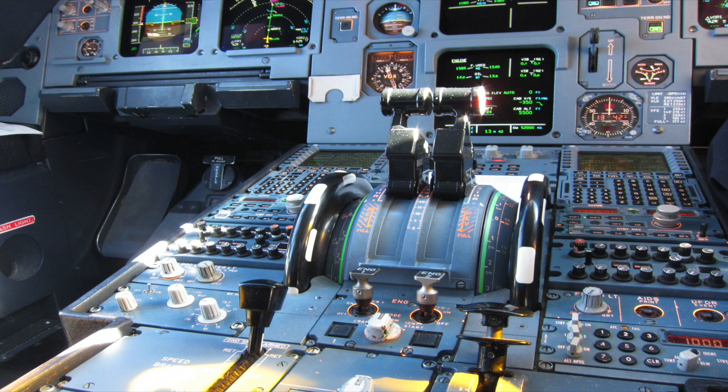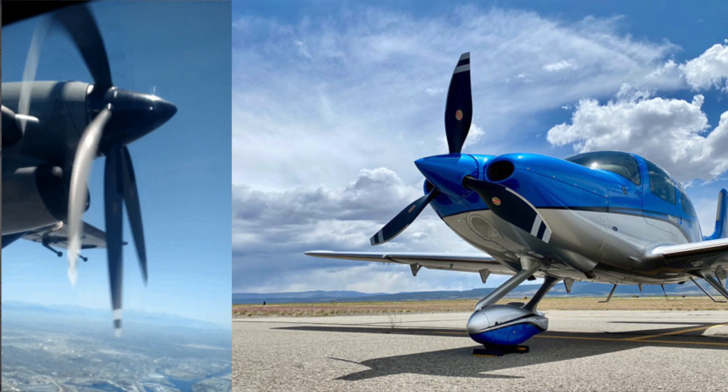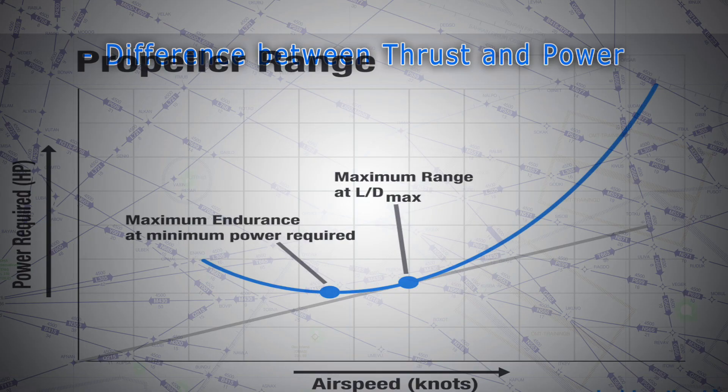So those levers in that turbine cockpit aren't throttle levers or power levers, they are thrust levers. But reciprocating engines and turboprops do not directly create thrust. Instead, they spin a shaft.